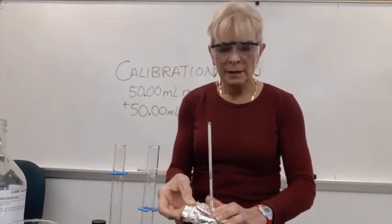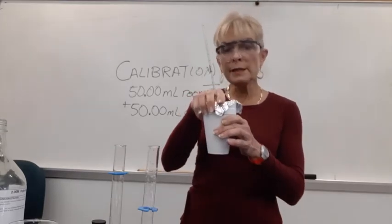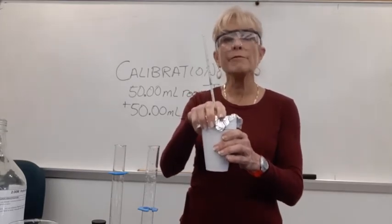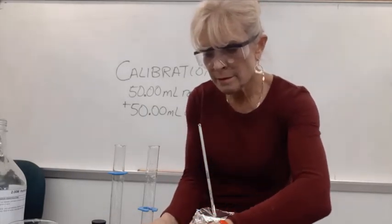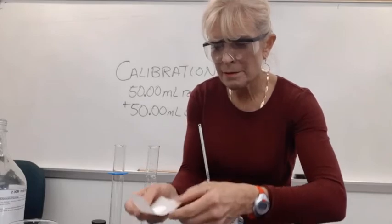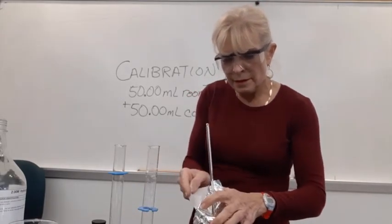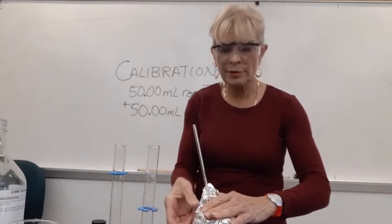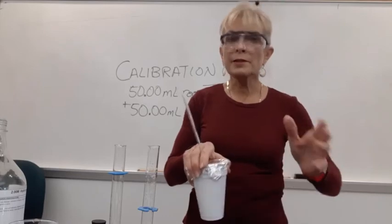Okay. Swirl a bit. Let it equilibrate. Read the initial temperature of the liquid in the calorimeter. And then get ready. Slide in the measured amount of solid and start swirling. Start the timer.